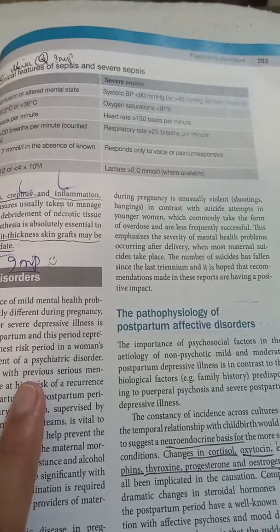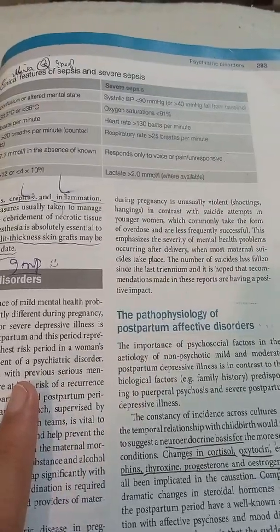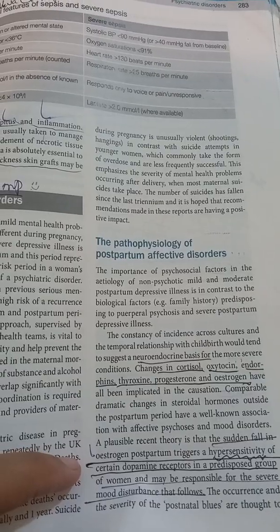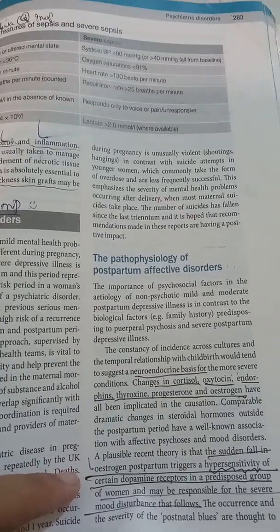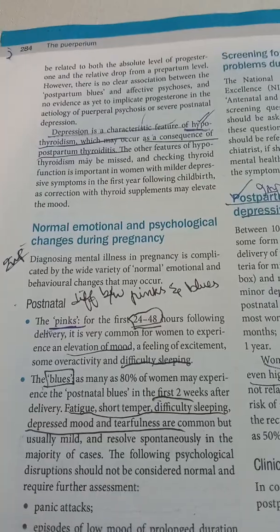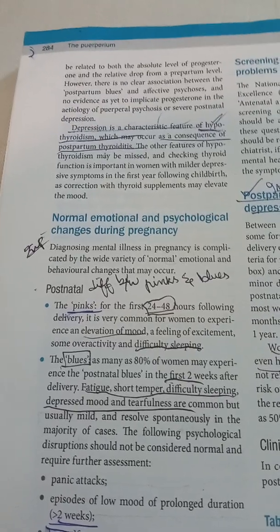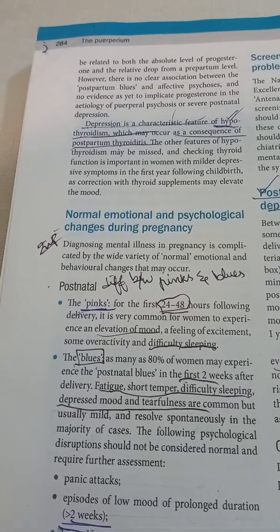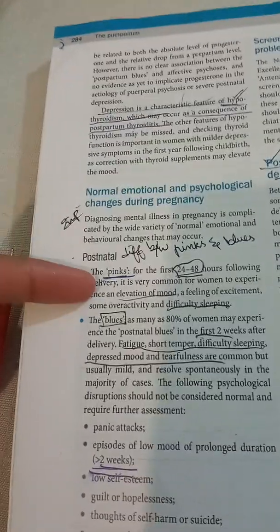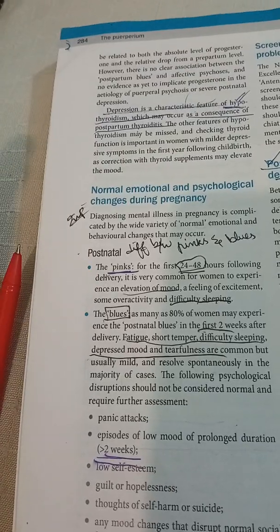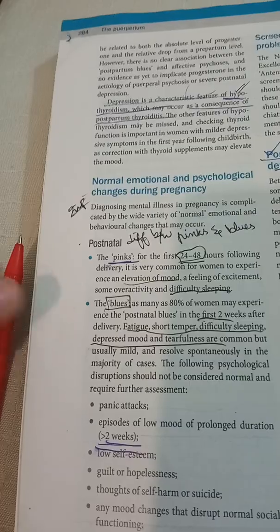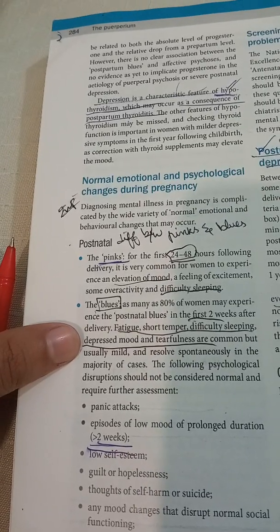Psychiatric disorders are one of the leading causes of postpartum problems. There is a sudden fall in estrogen postpartum which triggers hypersensitivity of certain dopamine receptors in predisposed women, responsible for severe mood disturbance. Depression is also a classic feature of hypothyroidism, which may occur as a consequence of postpartum autoimmune thyroiditis. Normal postpartum emotional changes include postnatal 'pinks' in the first one to two days — elevation of mood, difficulty sleeping, some overactivity.